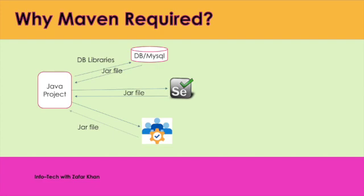Apart from this, suppose today we have downloaded different types of libraries and tomorrow I want to upgrade to the latest version. We have to remove all existing versions of libraries, download the latest version of the JAR file, and add it to our project. This is a continuous process. So these are the two major problems — downloading manually and upgradation.